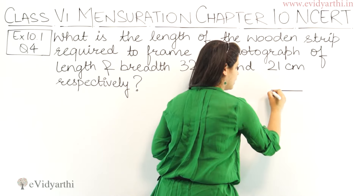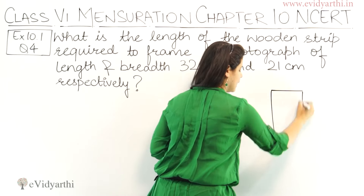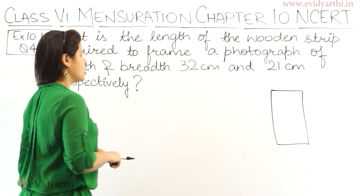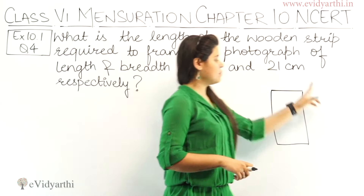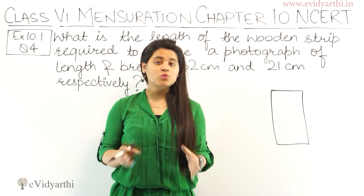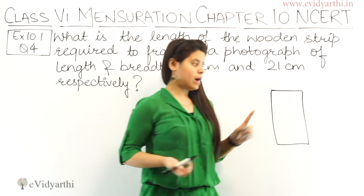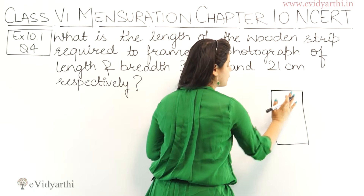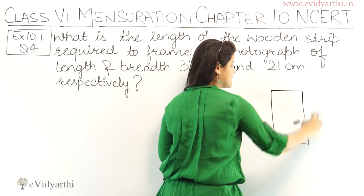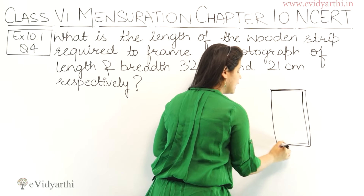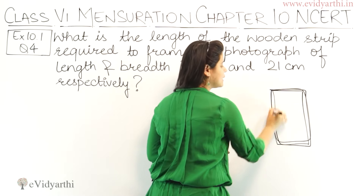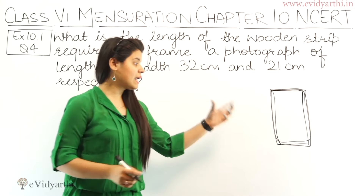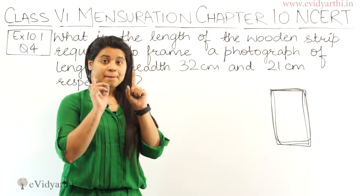So we have a photograph and we have to frame it using wooden strips. If you have to frame it, the frame will come to the sides — meaning we are going to concentrate on the boundaries. So if you have to frame it, that is the perimeter.